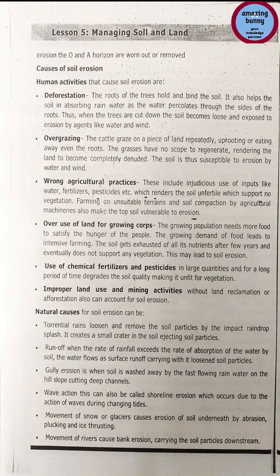The second human cause is overgrazing. Cattle graze on a piece of land repeatedly, uprooting or eating away even the roots. The grasses have no scope to regenerate, rendering the land completely denuded, making the soil susceptible to erosion by water and wind. Third cause is wrong agricultural practices, including injudicious use of inputs like water, fertilizers and pesticides, which renders the soil infertile and supports no vegetation. Farming on unsuitable terrains and soil compaction by agricultural machinery also make the top soil vulnerable to erosion.